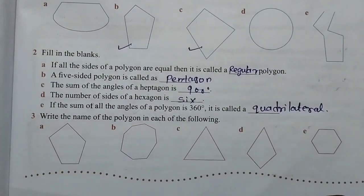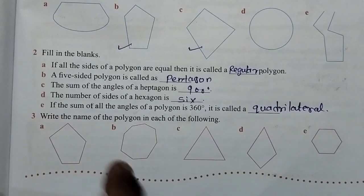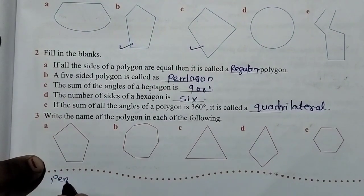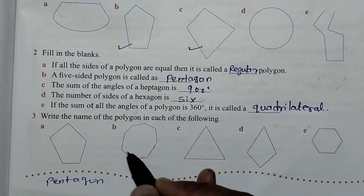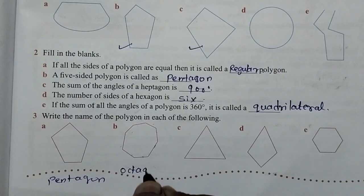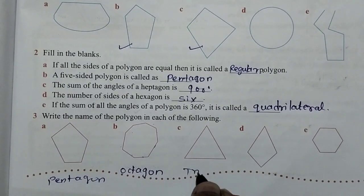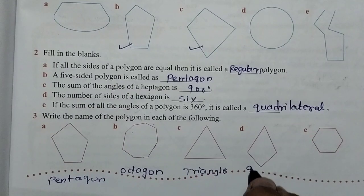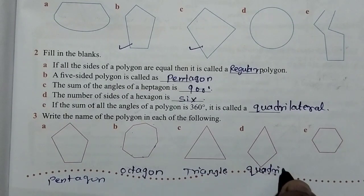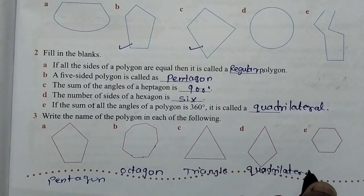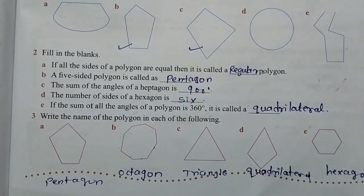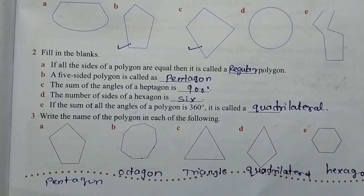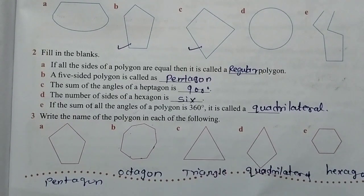Question number 3: Write the name of the polygon in each of the following. So here our Exercise 12F is over. In next video, we will solve chapter check-up of this lesson. Thank you so much.